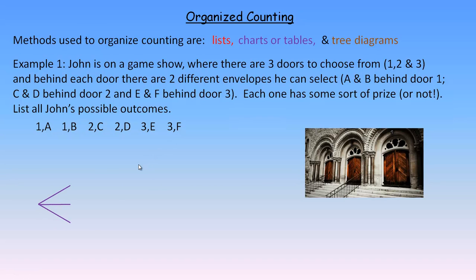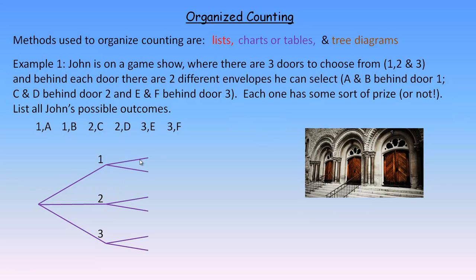How we would draw that with a tree diagram is like this. This represents the start. There are three branches here because first he's going to pick one of the three doors, so we put door number one here, two here, and three here. This represents picking one of the three doors. Then from each of these, he has a choice of picking one of two envelopes, which is why there are two branches coming out from each door. We put A and B here, C and D here, and E and F at the end.